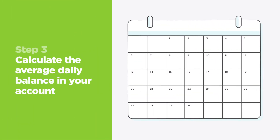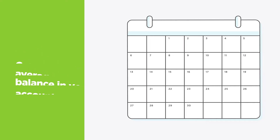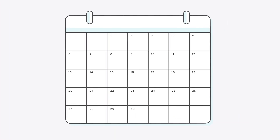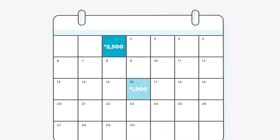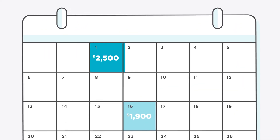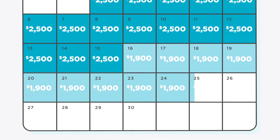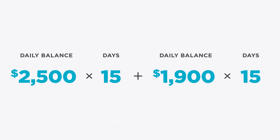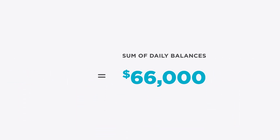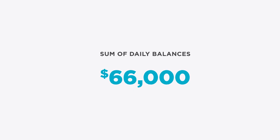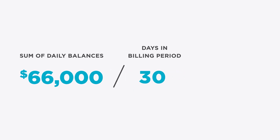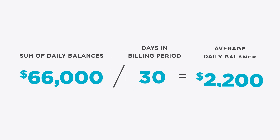Step 3: Calculate the average daily balance in your account over the course of the billing period. For example, let's say you start out the month with an unpaid balance of $2,500. Then, in the middle of the month, you make a $600 payment, which brings your balance down to $1,900 for the rest of the month. To get the average daily balance, you first need to add up the balances for every day in the billing period — this gives you the sum of your daily balances. Then divide that sum by the number of days in the billing period to get your average daily balance.